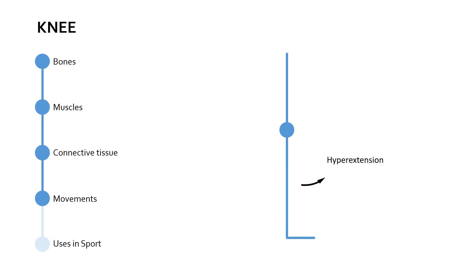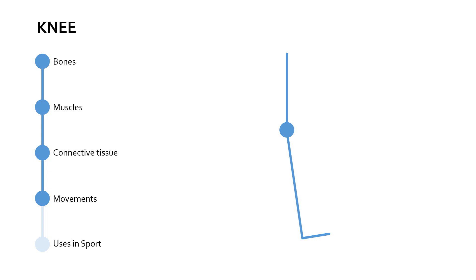Occasionally, you might encounter a movement known as hyperextension. This would happen if an accident occurs — it's not something the knee can do under normal circumstances. For example, if you jump and land wrongly, you might force the knee into hyperextension, which is generally a negative thing as it can cause damage to the knee joint — that's when the knee goes beyond its normal range of movement.